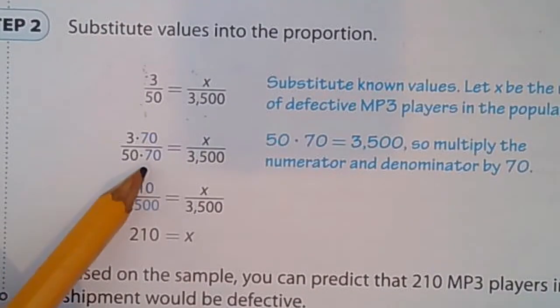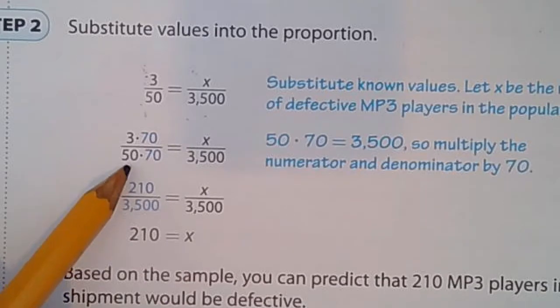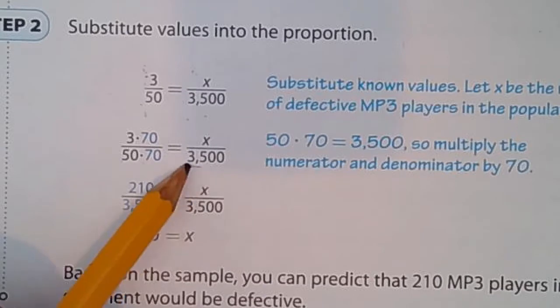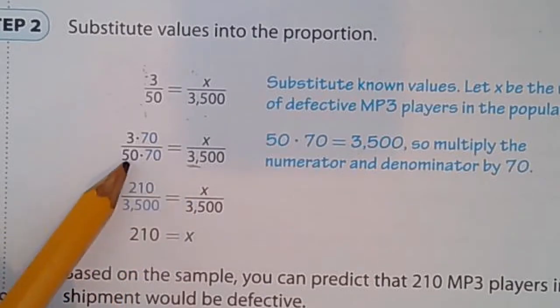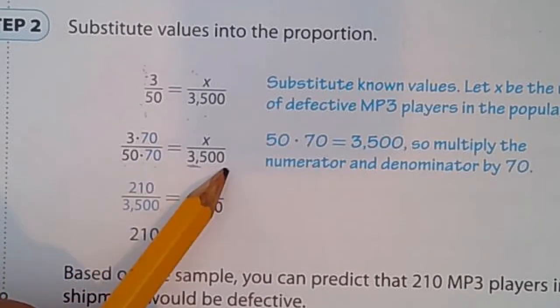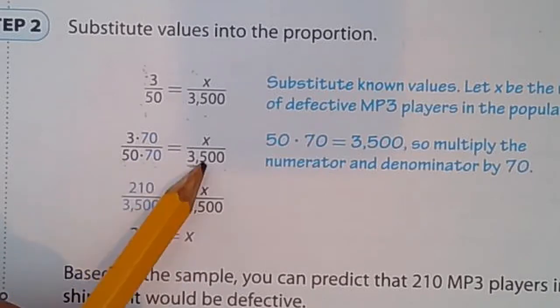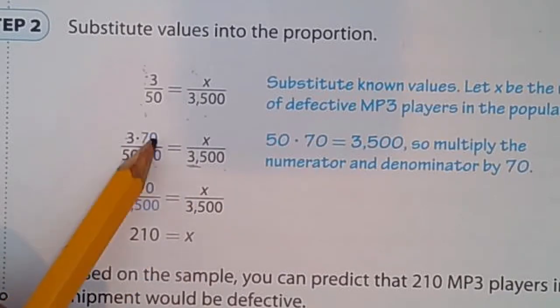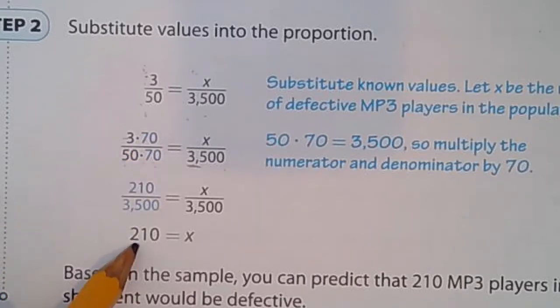We will then solve the proportion. What they decide to do is they decide to see that 5 times 7 is 35. Notice that. So, 50 times 70 is 3,500. Well, if you multiply this by 70, then this has to be multiplied by 70. So, 3 times 70 is 210. And that's how we can get our answer.